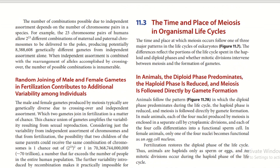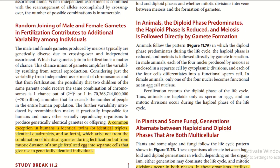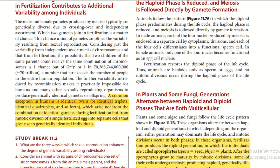Regarding the time and place of meiosis in organismal life cycles: in animals, the diploid phase predominates, the haploid phase is reduced, and meiosis is followed directly by gamete formation. In male animals, each of the four nuclei produced by meiosis is enclosed in a separate cell by cytoplasmic division, and each of the four cells differentiates into a functional sperm cell. In female animals, only one of the four nuclei becomes functional as an egg cell's nucleus.